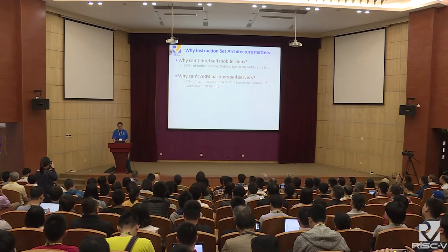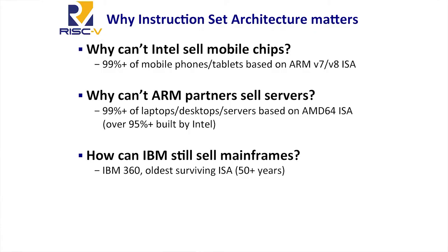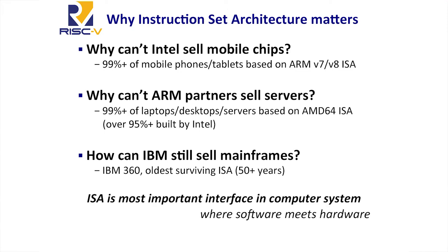A couple of things to take from that story: software is king. If you cannot run the software, nobody cares about your processor. Also, compatibility is really important — and you would think Intel would know this, as they based their whole company history on compatibility. Going back to another thing mentioned in the history: how can IBM still sell mainframes? That 360 ISA is really the oldest surviving ISA — it was the first ISA where a company had this idea of a single interface between software and hardware and many different implementations. It's still a multi-billion dollar industry for IBM. ISA really defines the segments: laptops and servers are x86, mobile and tablets are ARM, mainframes are IBM.